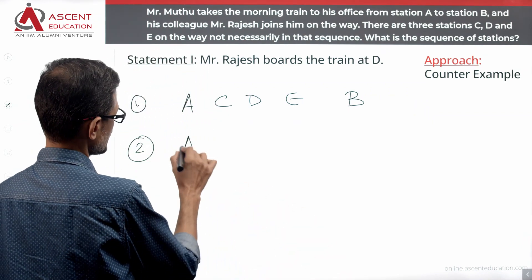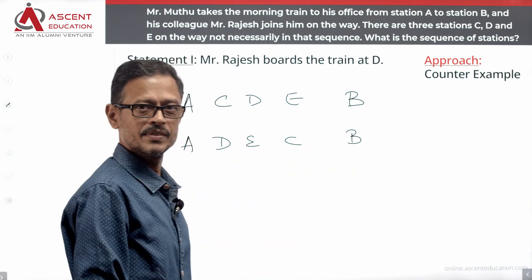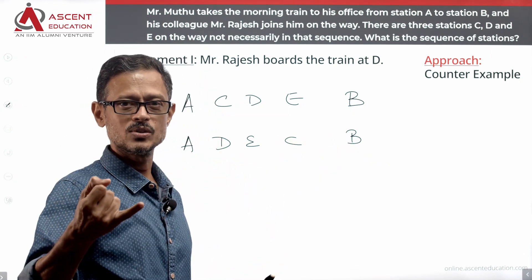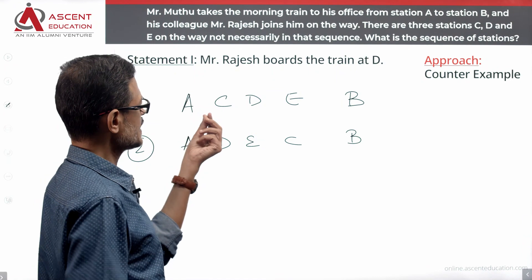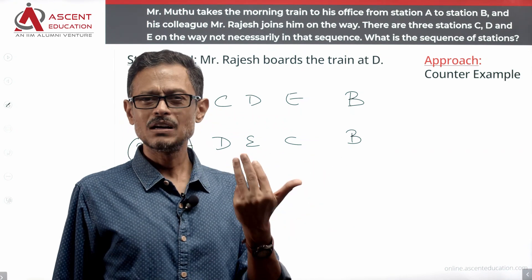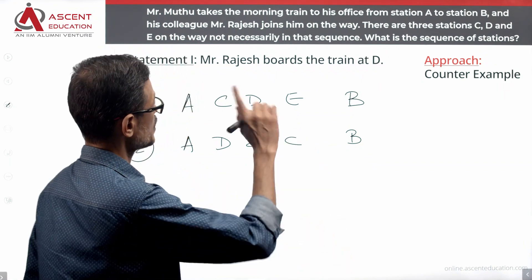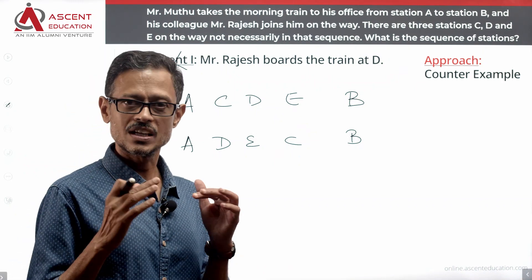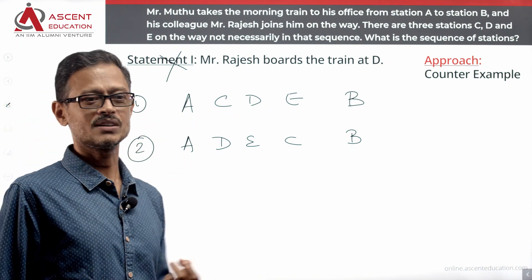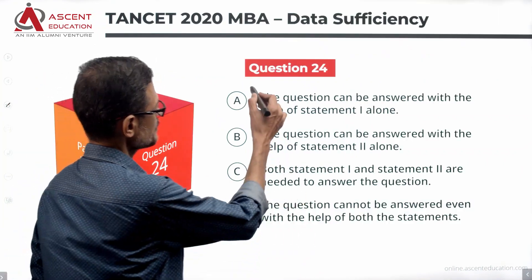But another valid sequence could be A-D-E-C-B, where Rajesh still boards at D and exits at B. So we get multiple possible sequences — A-C-D-E-B, A-D-E-C-B, A-D-C-E-B, and others. We are not getting a unique value using statement one alone, so statement one alone is not sufficient.